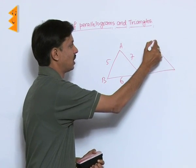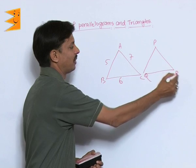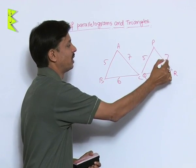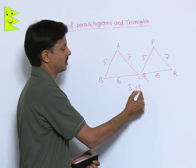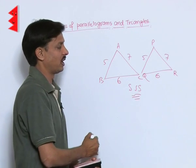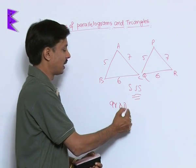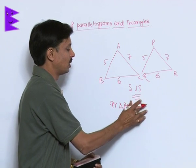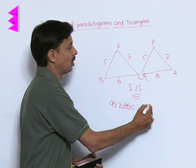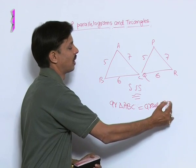If this is a triangle having the sides five, six, seven units, this is the triangle PQR having the sides five, six, seven units, by SSS conditions, these two triangles are congruent. So we can say area of triangle ABC is equal to area of triangle PQR.